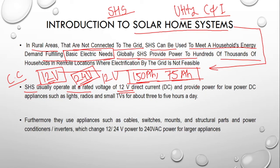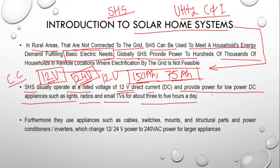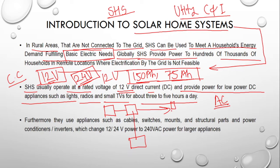In a solar home system, the 12-volt DC provides power for low-power DC appliances like lights, radios, and small TVs for about 3 to 5 hours a day. If we do not need AC power, we can avoid the inverter entirely — solar panels feed the charge controller, power is stored in batteries, and connections go directly to DC fans, DC TVs, and other DC appliances. Avoiding the inverter drastically reduces the system cost.